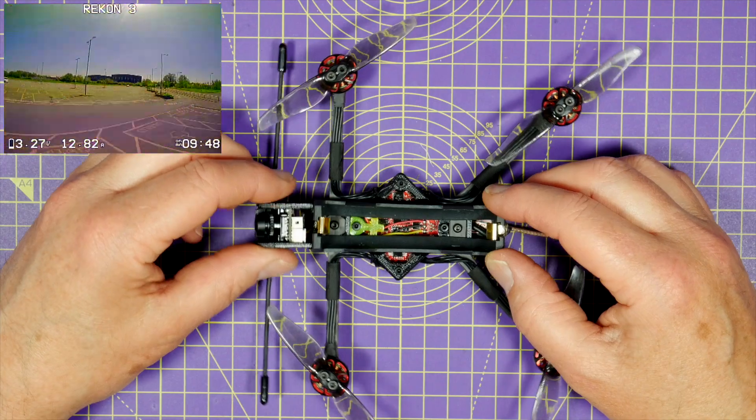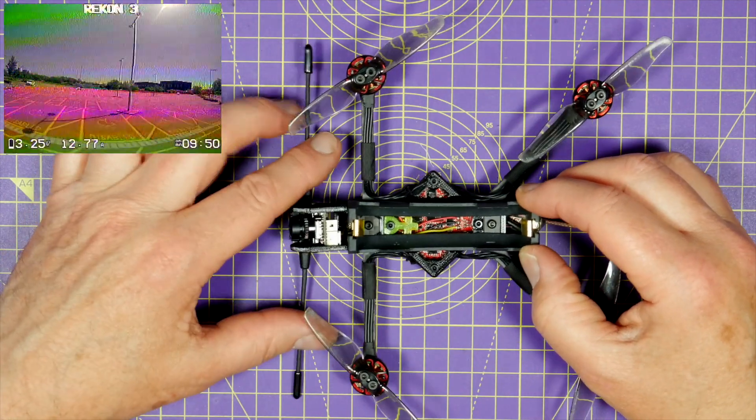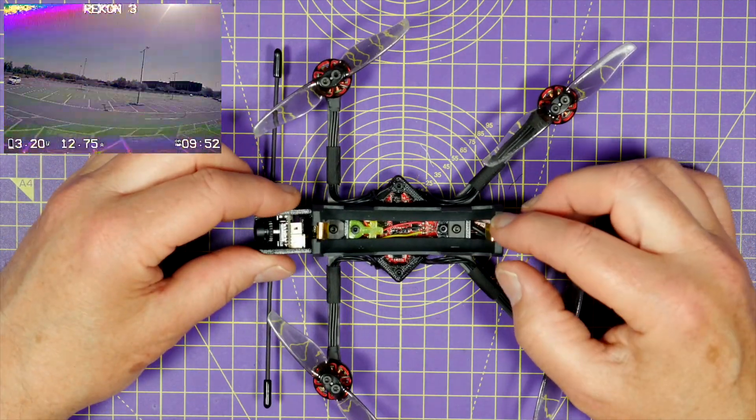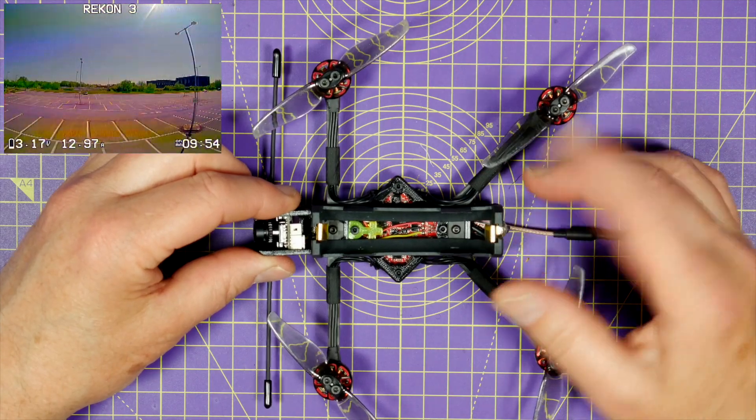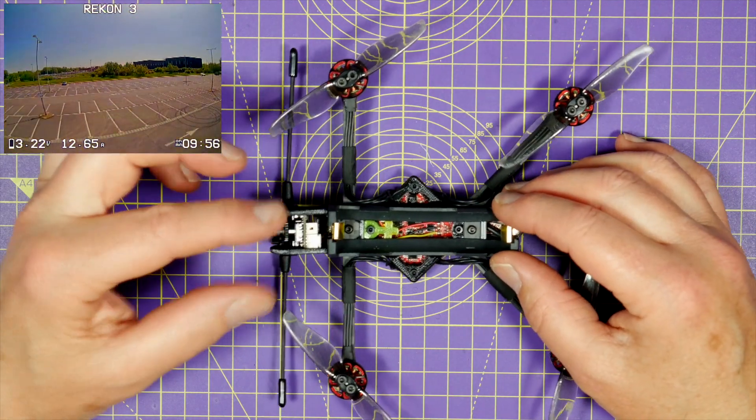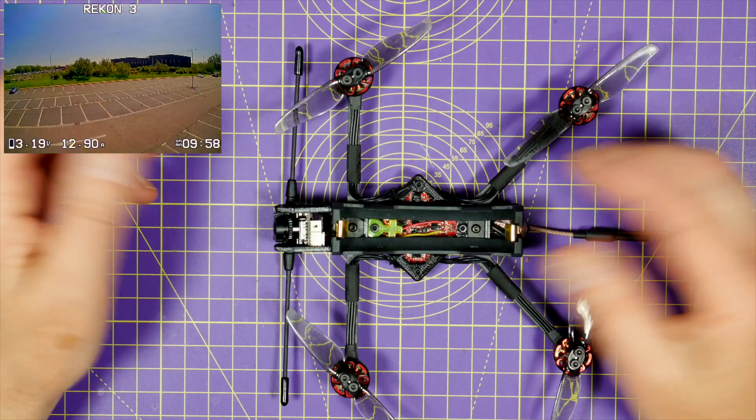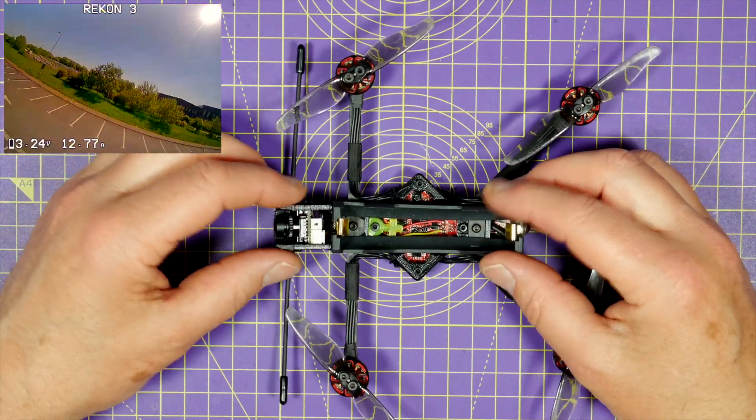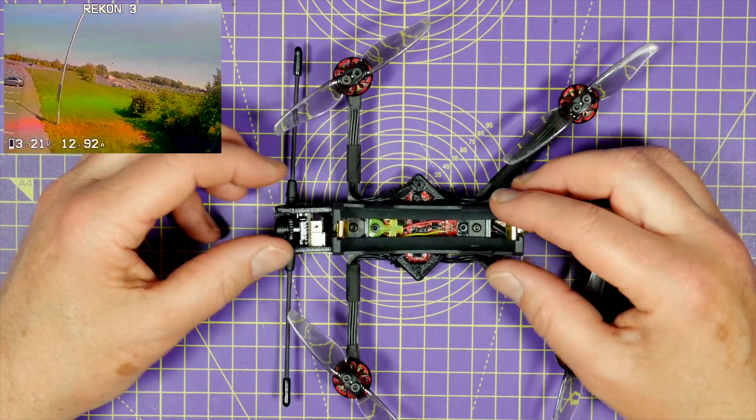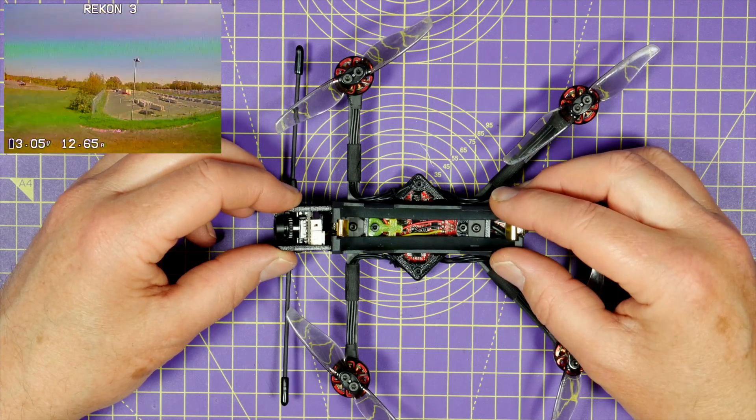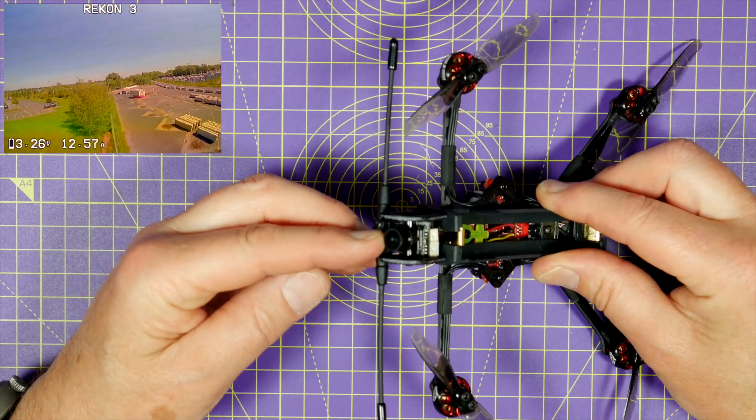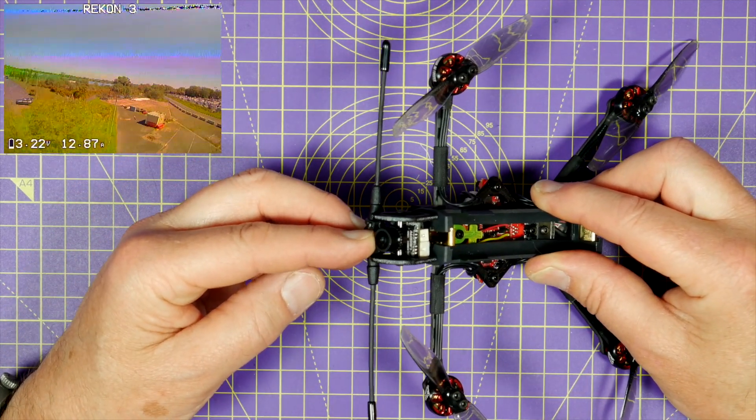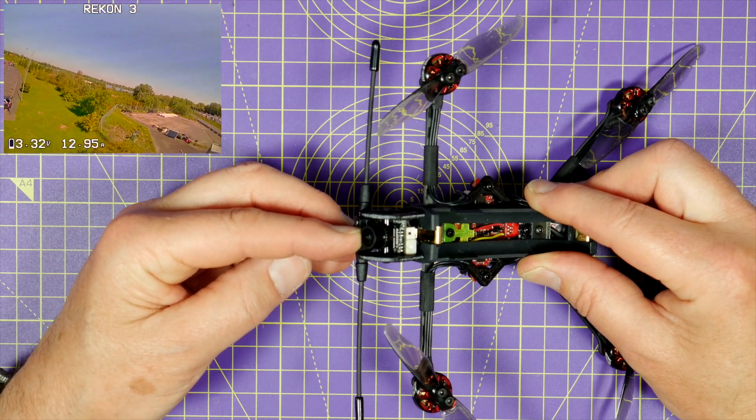The range on this is fantastic, especially with Crossfire, so that's not a problem. And the 350mW VTX is good. But there is a bit more video noise on there than I'd like. It's by no means terrible, but recent Bind and Fly mini quads, the analog VTXs have been pretty good.